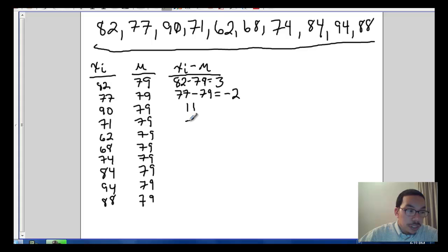79 and 71 should give us negative 8. 79 and 62 should give us negative 17. 68 and 79 should give us negative 11. 74 and 79 is negative 5. 84 and 79 should give us positive 5. 79 from 94 should give us 15. And our last one, 88 minus 79 gives us 9.